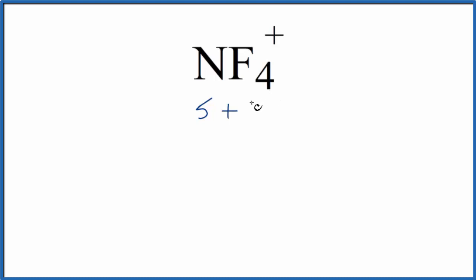Fluorine is in group 17, sometimes called 7A, so 7 valence electrons, but we have 4 fluorine atoms.